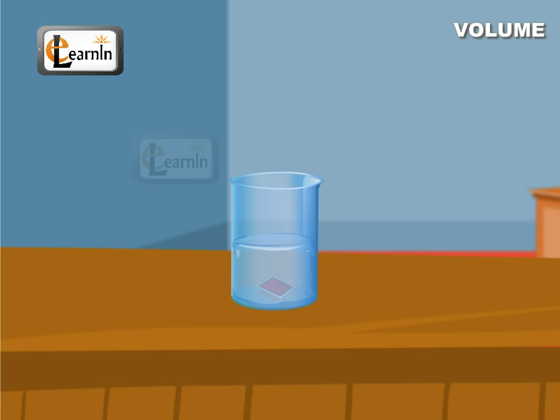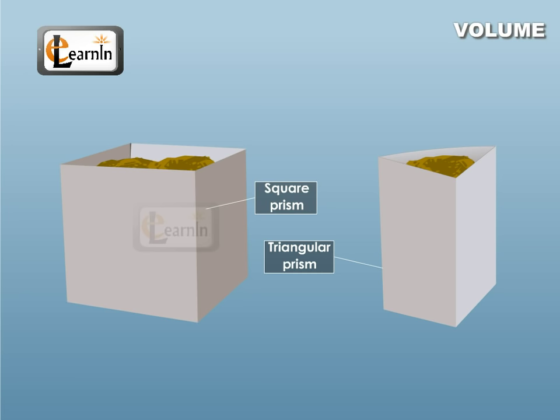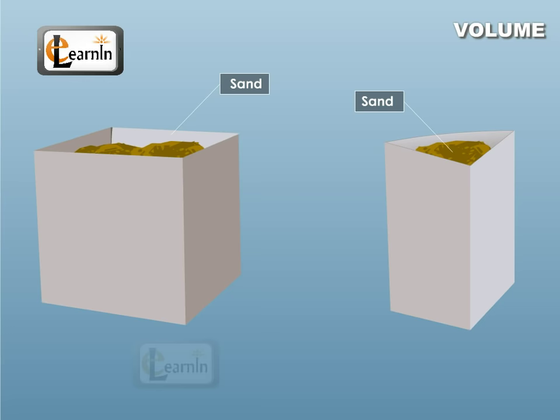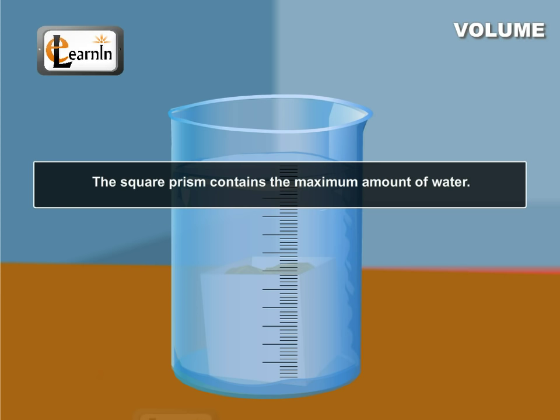This is a square prism and this is a triangular prism. They are made out of two thick papers of the same dimensions. Let us see which of these two have the largest volume. Fill each of them with sand and transfer this into a measuring jar. You can see that the square prism contained the maximum amount of water.